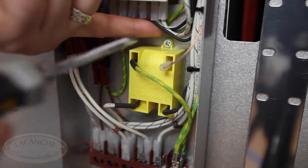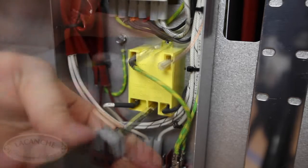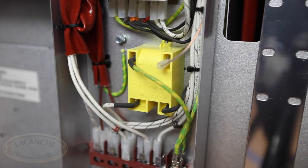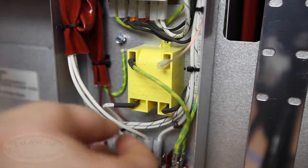To dismount the old module, completely remove the upper mounting screw and loosen the lower mounting screw. Then slide the module off the remaining mounting screw.